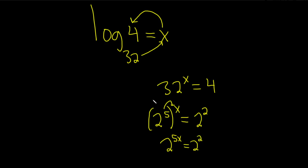And because the bases are the same on both sides, we can now drop the 2's. So we end up with 5x, and that's equal to 2.